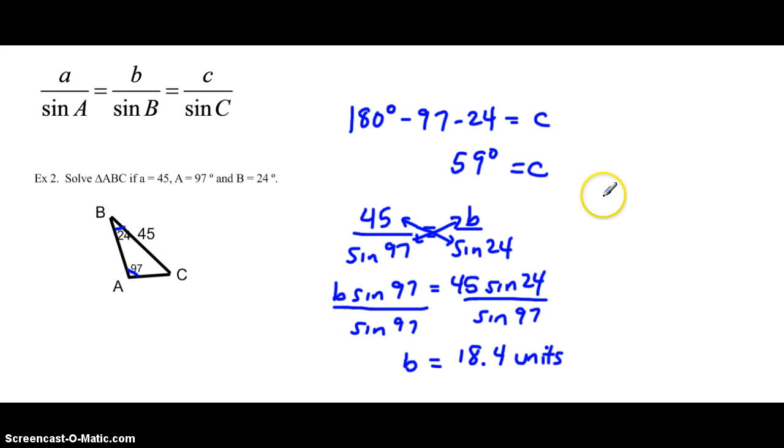Similarly, we can solve for c in the same way where we have 45 over sine of 97 equals c over sine of 59. Again, you cross multiply and go ahead and try that on your own and bring it back.